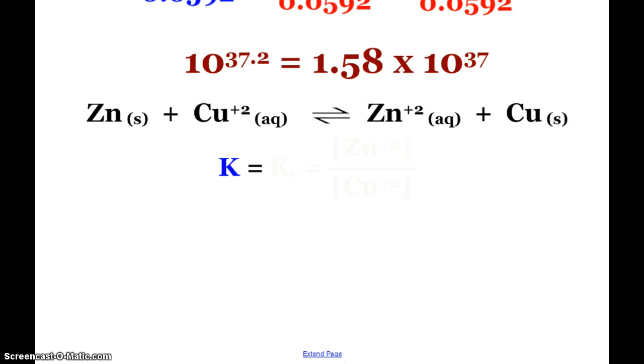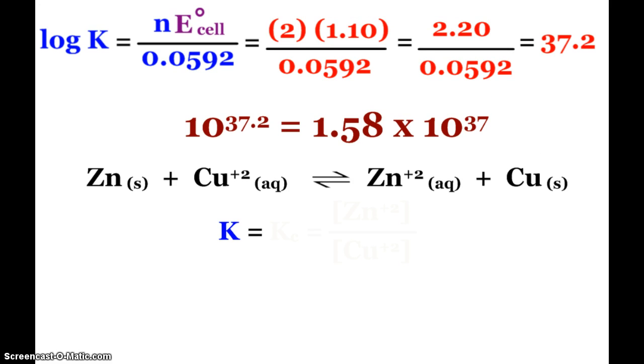This is the reaction of the cell. They could ask you, what's the equilibrium expression for this reaction? Well, our solids are not included, so we have two aqueous ions. You can call this a Kc. It would be the concentration of zinc over the concentration of the copper two. At equilibrium, there would be a lot of the zinc and hardly any of that copper, as expressed by that huge K value.